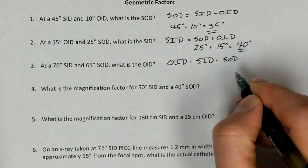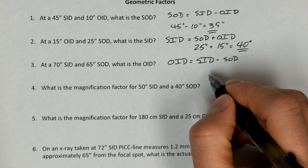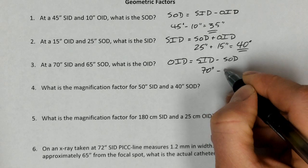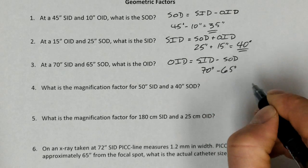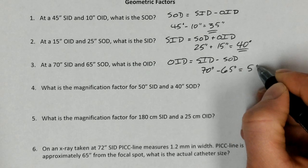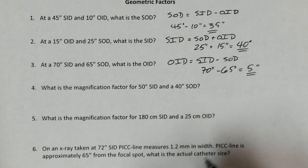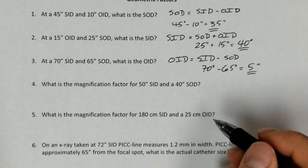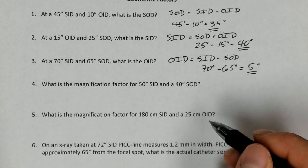And so if we plug this in to the numbers that we have, we've got a 70-inch SID minus 65-inch source to object distance. And that gives us an OID, an object to image distance of 5 inches. All these play a huge role in magnification, but it's helpful to review these calculations here because the problems don't always give us what we need in order to solve for the magnification factor and things of that nature.